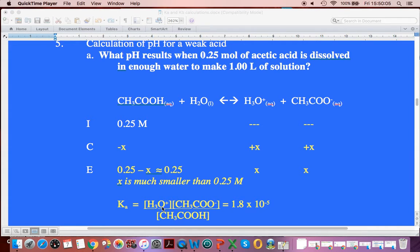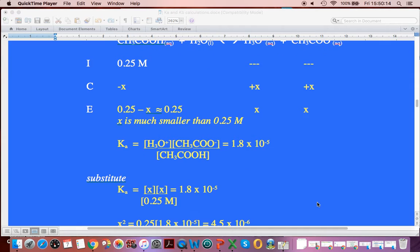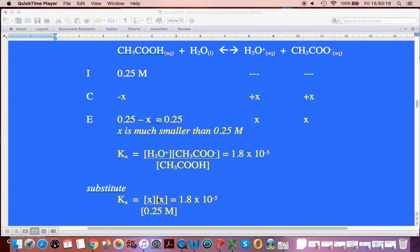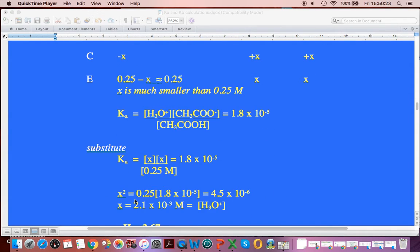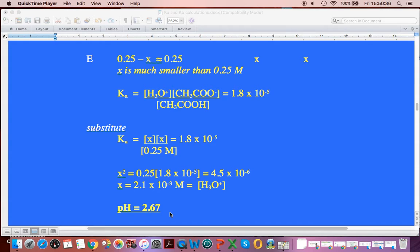This is going to be X, X squared, is going to equal our Ka times the CH3COOH. So that's what we're getting right here. X squared, we plug in all these values and we're solving for X. So X squared equals 0.25 times this. We expand it out, X equals this. We now have our H3O+ concentration. And the last step's easy, minus log, and we get 2.67.